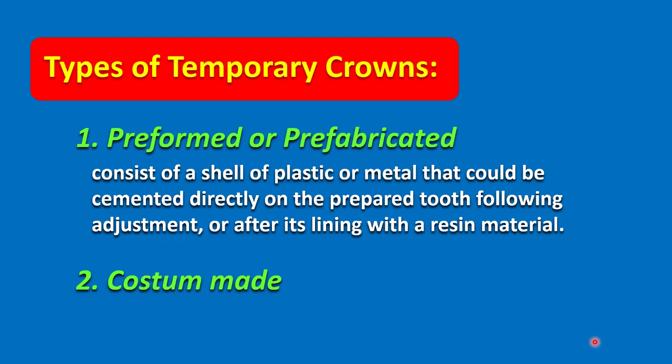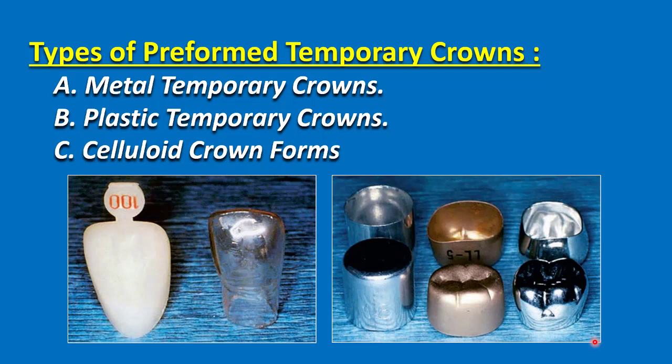The preformed crowns are shells of plastic or metal that can be cemented directly on the prepared tooth following adjustment, or after being lined with a resin material. Types of preformed temporary crowns fall into three main categories: metal temporary crowns, plastic temporary crowns, and celluloid crown forms.